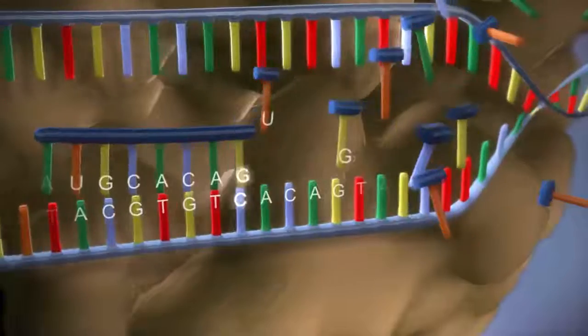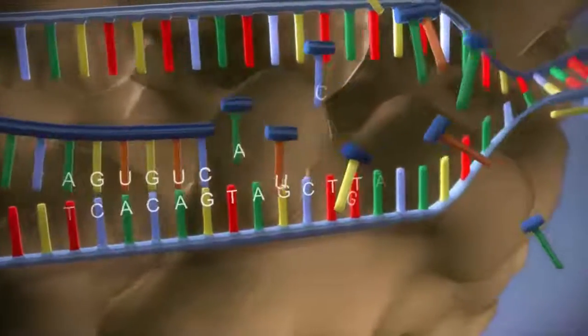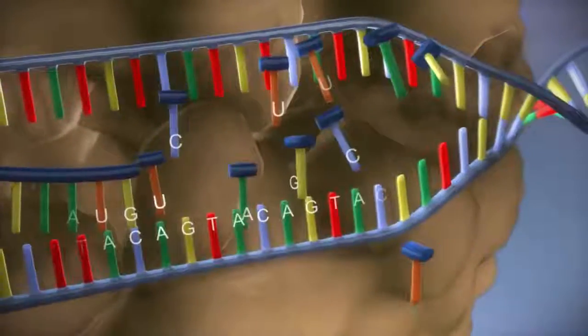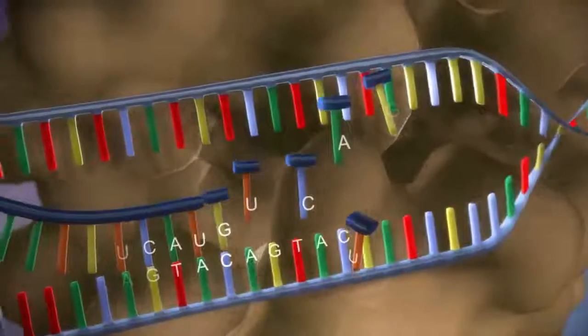The DNA code determines the order in which the free bases are added to the messenger RNA. This process is called transcription.